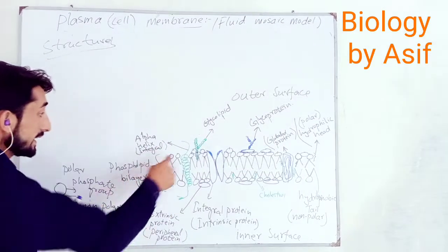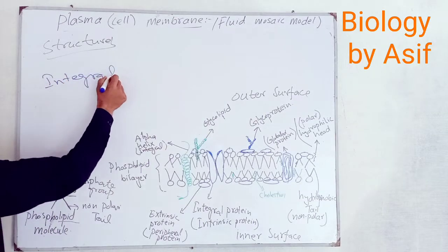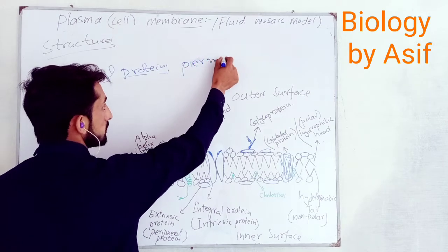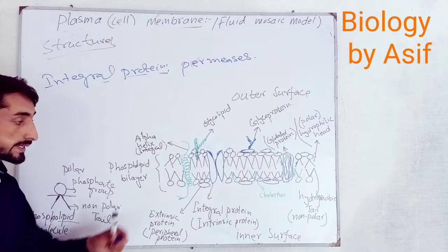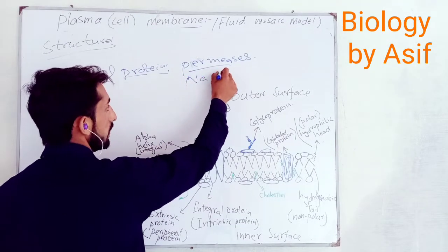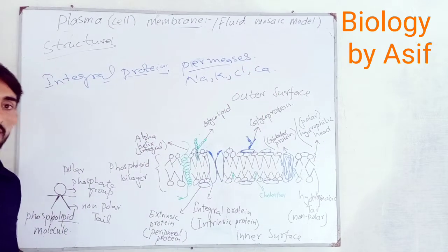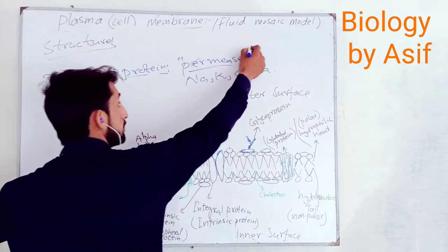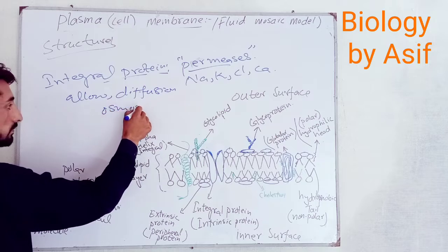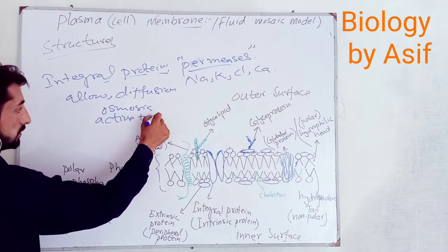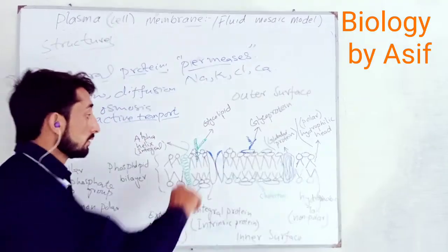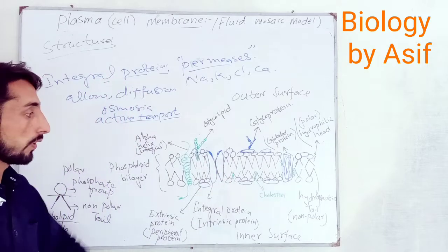The integral protein, also known as intrinsic protein, makes the cell membrane act as a permease. It allows the transport of ionic substances like sodium, potassium, chlorine, and calcium. It enables diffusion, osmosis, and active transport — the transportation of molecules inside and outside of the cell — and is also known as channel protein.